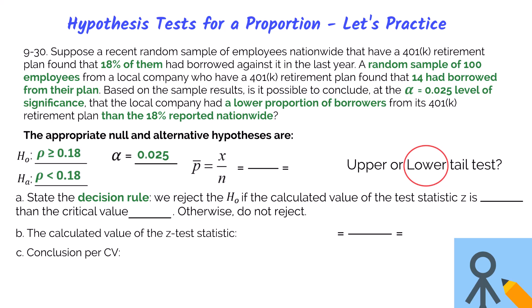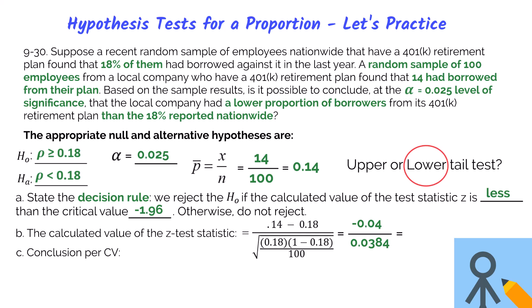The alpha level is 0.025. The sample proportion is 14 divided by 100, which equals 0.14. In part a, the decision rule is: reject the null hypothesis if the calculated z-test statistic is less than the critical value of negative 1.96 for a 0.025 significance level, found using Excel's norm.s.inv function. Otherwise, do not reject. In part b, we calculate the z-test statistic using the formula, getting negative 0.04 in the numerator and 0.0384 in the denominator, which gives us a z-statistic of negative 1.04.